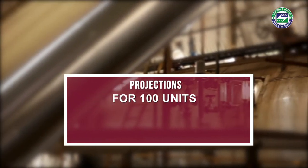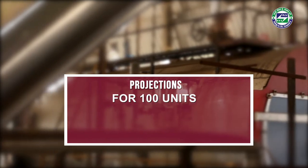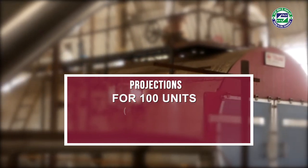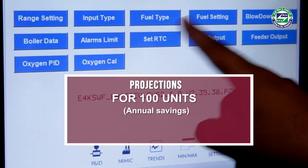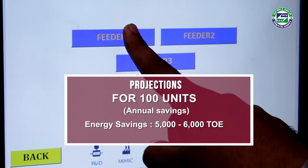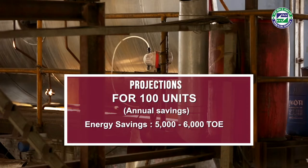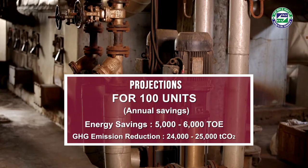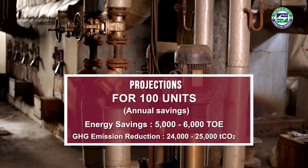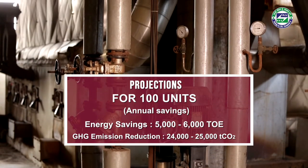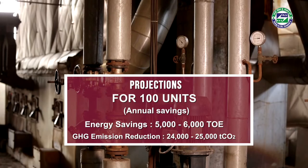If implemented by 100 units, optimum air-fuel ratio can be achieved. The technology can lead to a saving of 5,000 to 6,000 tons of oil equivalent, and a GHG emission reduction of 24,000 to 25,000 tons of carbon dioxide emission annually.